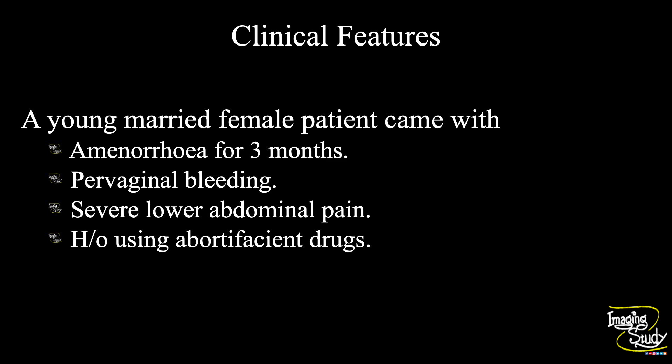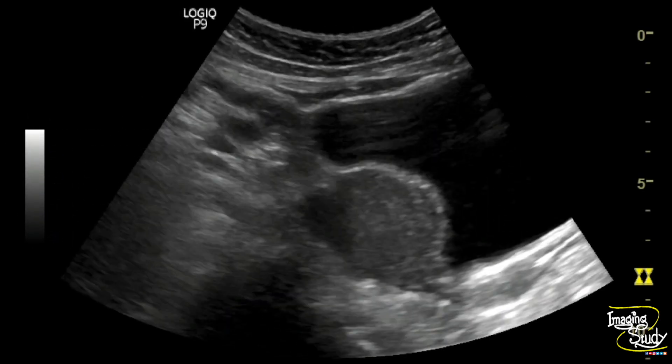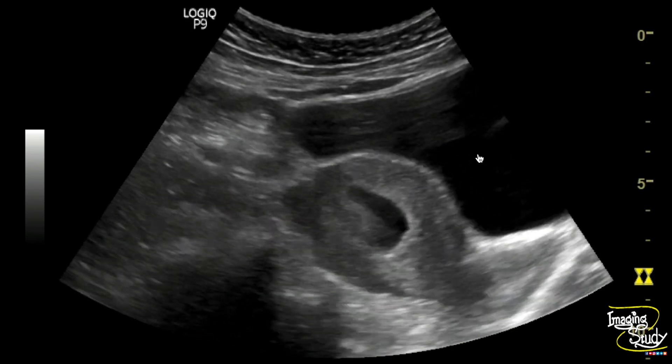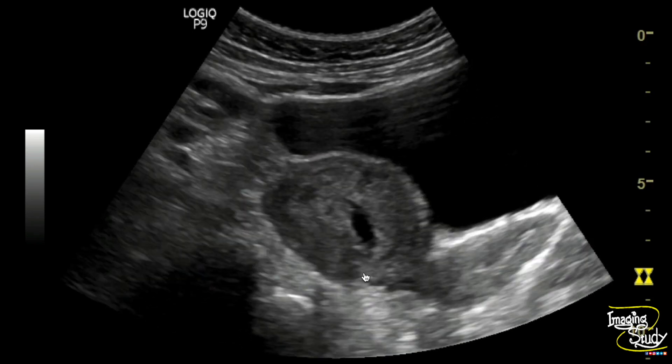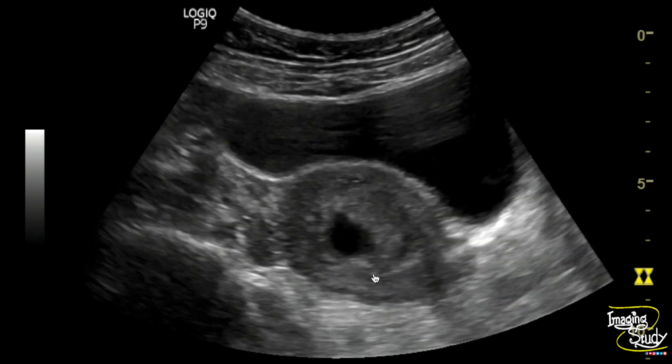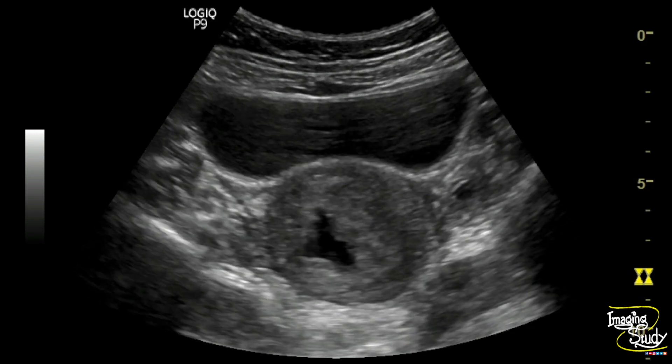Let's see what we have got on ultrasound. Here you can see the longitudinal section of the bulky uterus, and there is an irregular distorted sac noted within the uterine cavity.